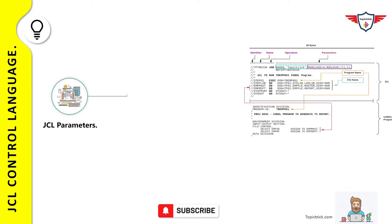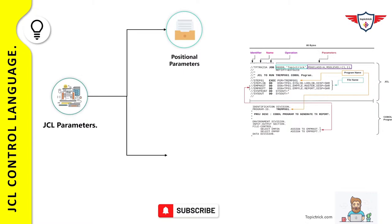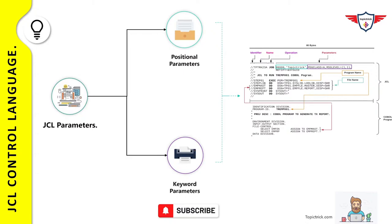JCL parameters are broadly categorized into two categories: positional parameters and keyword parameters. A positional parameter must be placed in a specific position within the JCL statement. If you want to omit a positional parameter, you must replace it with a comma. For example, two positional parameters are used in a job card: accounting information (five nines) followed by the username 'TOPICTRICK', both highlighted in green. Positional parameters have a specific place in a control statement.